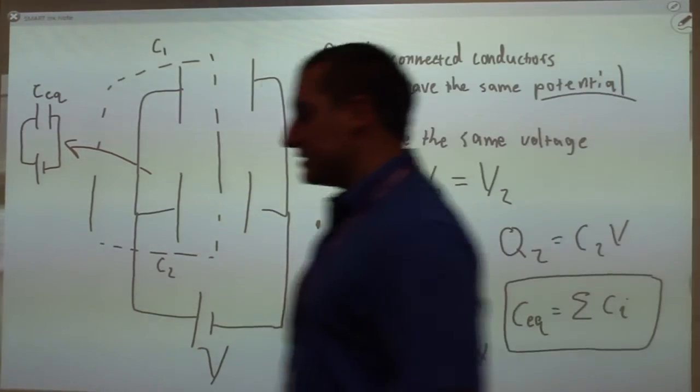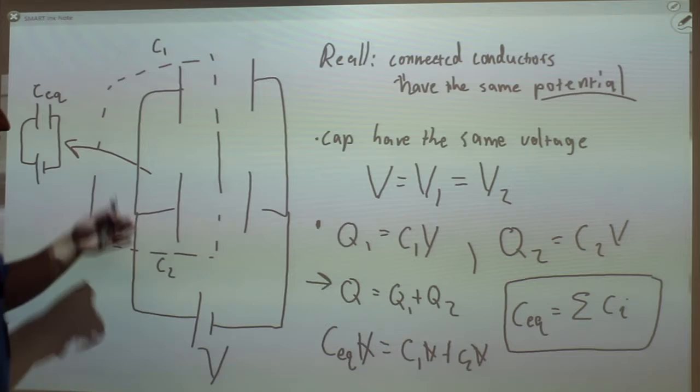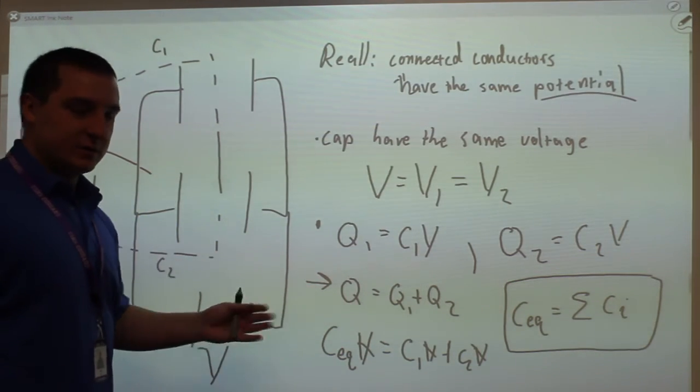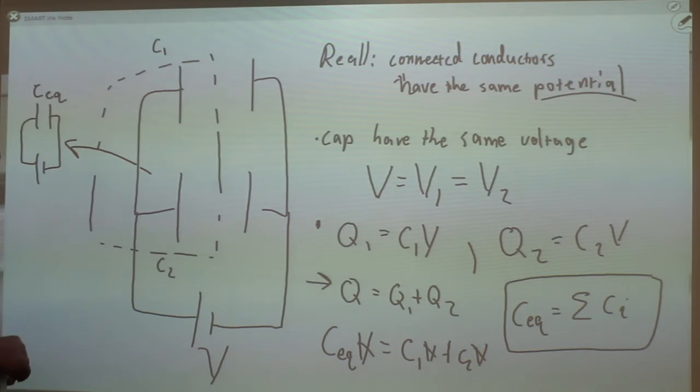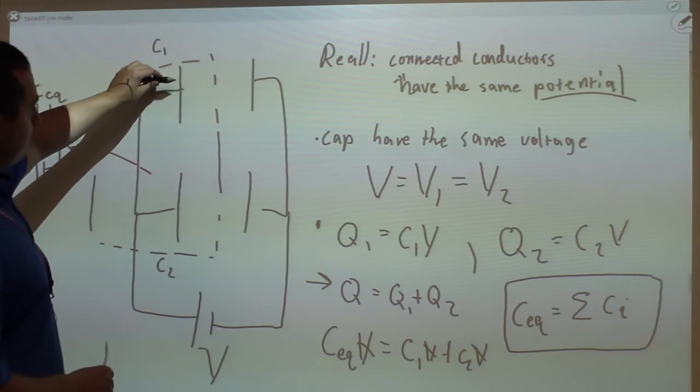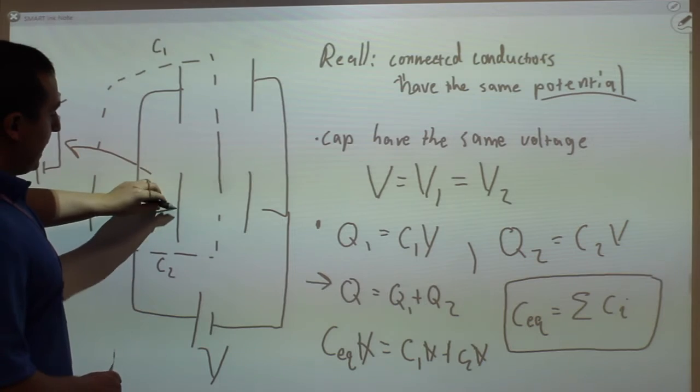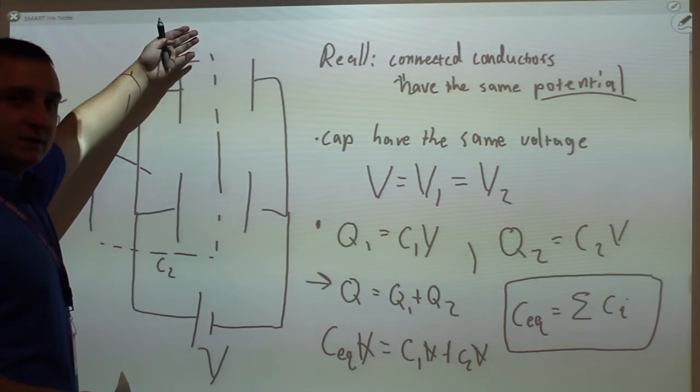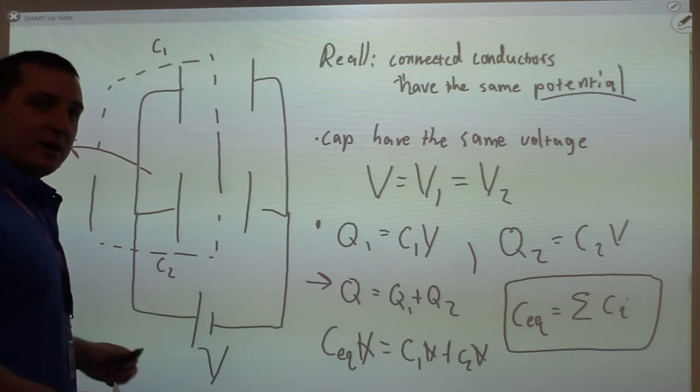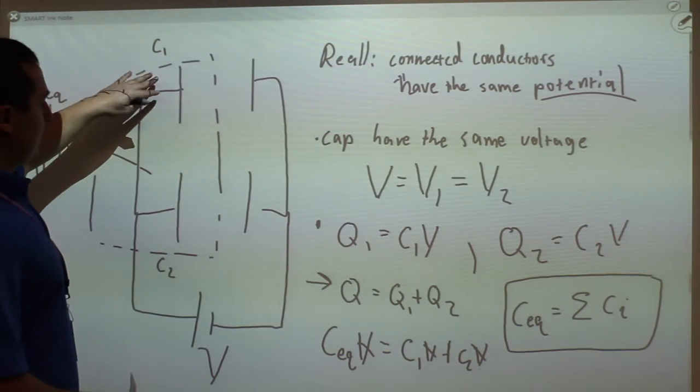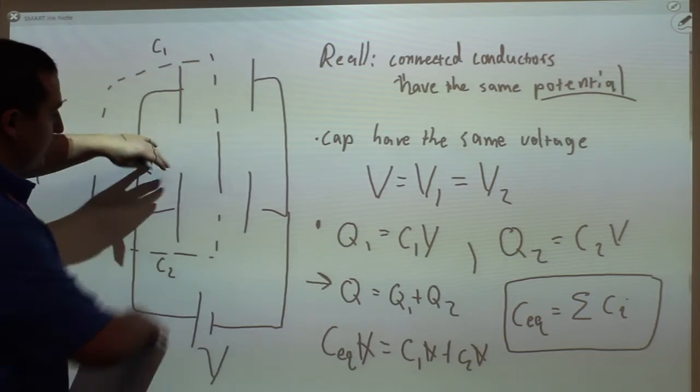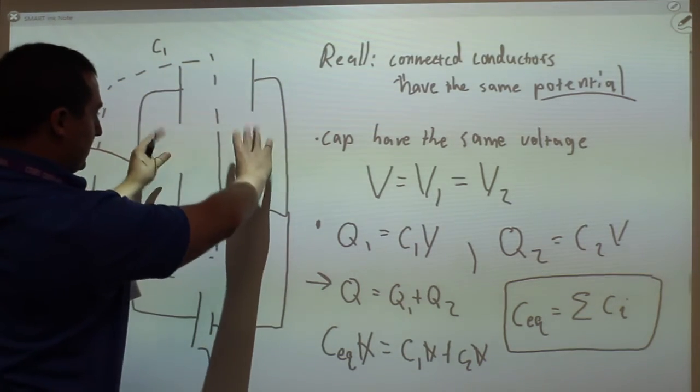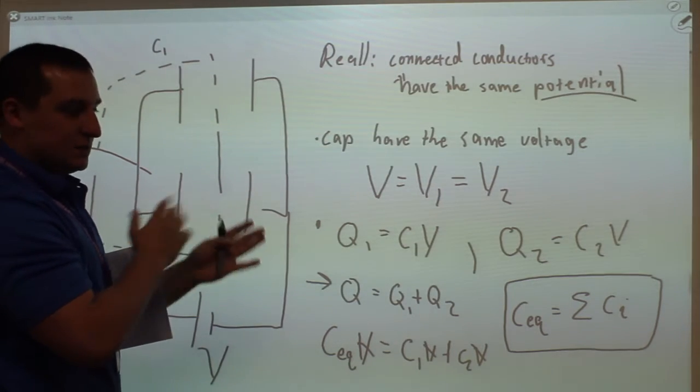So the capacitances of capacitors in parallel add, just like springs, like we had when we were doing simple harmonic motion. You can think about adding capacitors in parallel as just increasing the area of the plates of the capacitor on this side, since they're all connected by a wire anyway. So if I kind of shrink this wire and bring them together, you can just kind of imagine the capacitor getting smushed together and becoming one big capacitor.